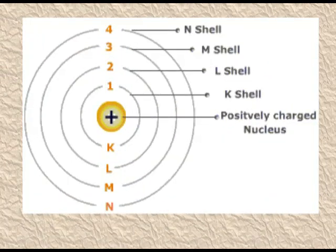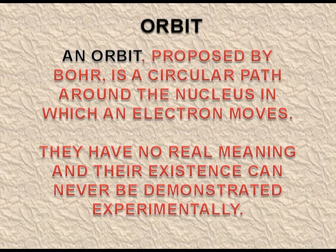This picture shows the KLMN shells in orbit. Orbits are the definite circular paths in which electrons are moving around the nucleus. This name was suggested by Bohr. An orbit proposed by Bohr is a circular path around the nucleus in which an electron moves. They have no real meaning and their existence can never be demonstrated experimentally.